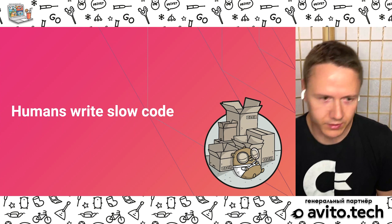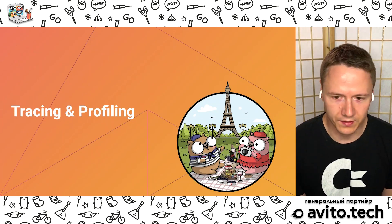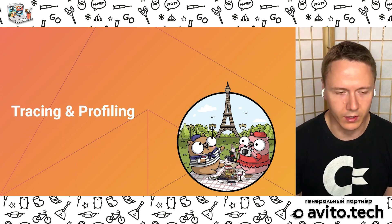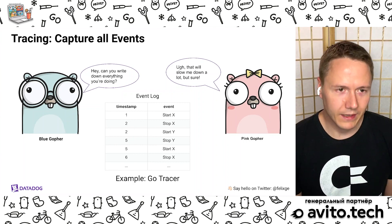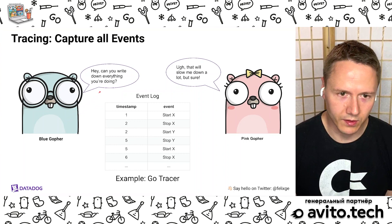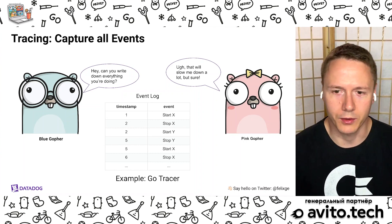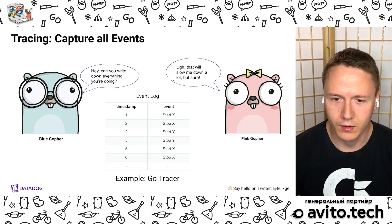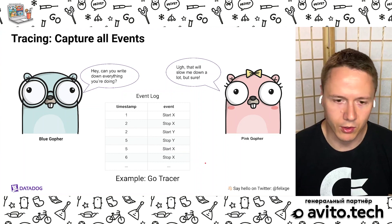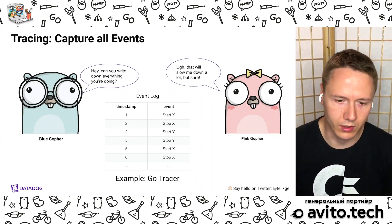Now we're finally getting closer to the main attraction. Humans write slow code, and we need tools to do something about it. Those tools are generally called tracing and profiling. The main idea in tracing is to capture all the events. The blue gopher wants to observe the pink gopher, so it says: can you write down everything you're doing? The pink gopher replies: that will slow me down a lot, but sure. The pink gopher then creates an event log where for every timestamp it records when it's starting something, stopping something, et cetera — you end up with a lot of data. That data can be very useful, for example if you want to debug a latency issue that only happens very rarely. An example of a tool in Go that works like that is the Go Tracer.